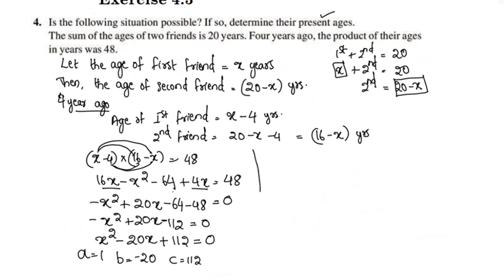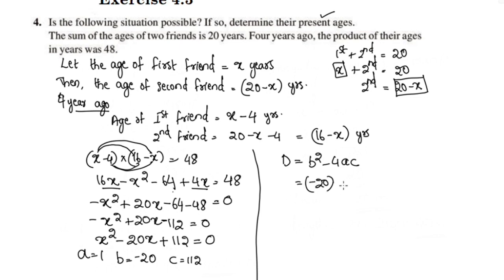So we get x squared minus 20x plus 112 equals 0. If we have real roots, we will check the discriminant. The discriminant is equal to b squared minus 4ac. Here b is negative 20, so b squared is 400. a is 1 and c is 112.